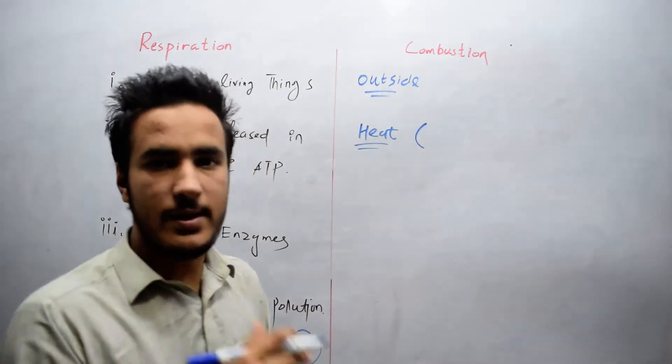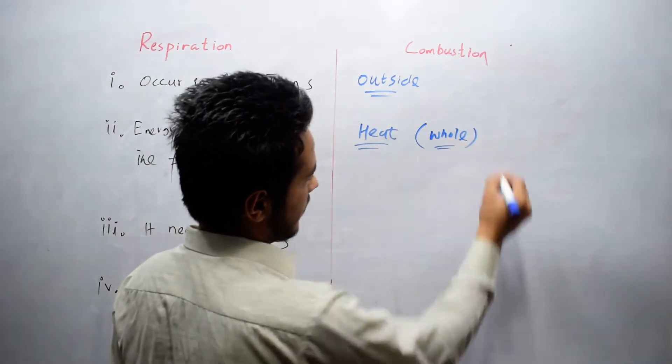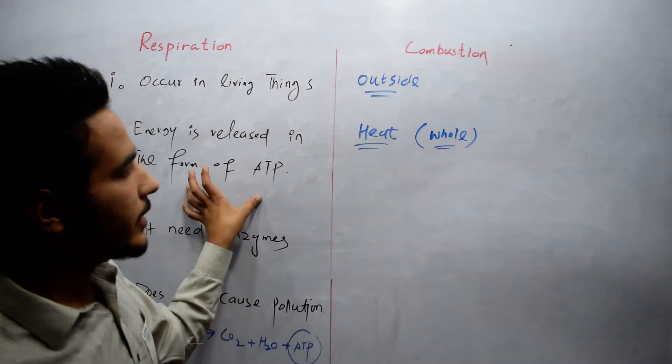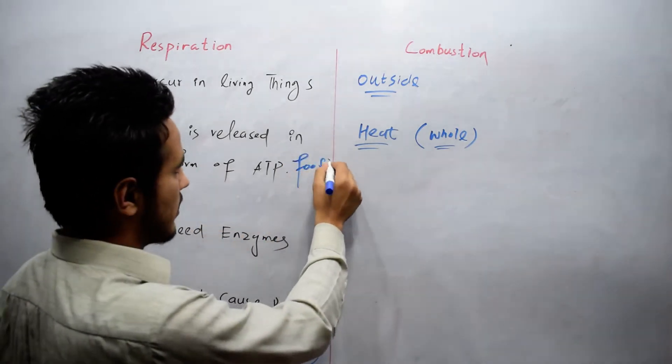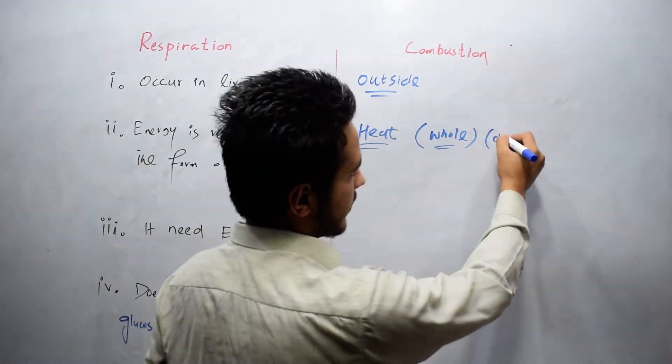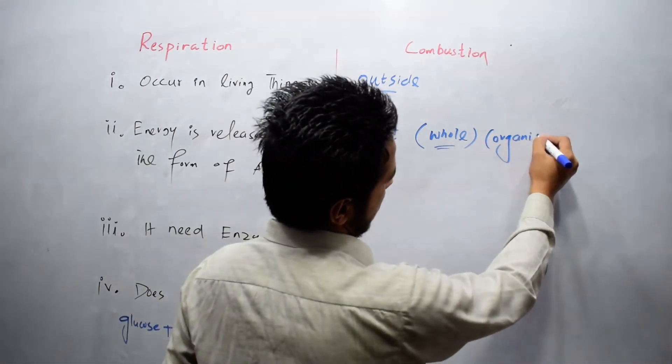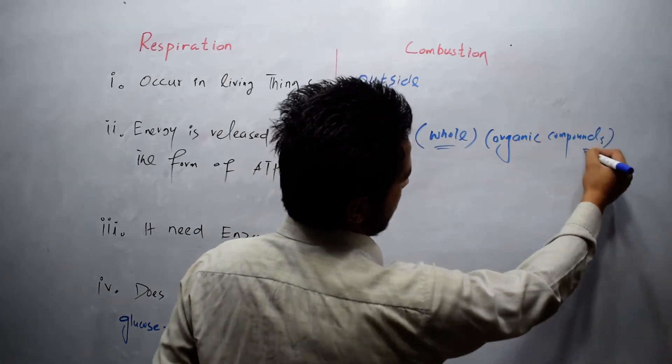In respiration, energy is released from the breakdown of food. While in combustion, it does not use organic compounds for energy release. For heat, combustion uses petroleum, gasoline, natural gas, etc.